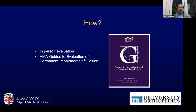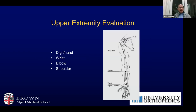How is this done? Just like an IME, a musculoskeletal impairment rating involves an in-person evaluation with a thorough physical examination focused on those aspects that the guides use to determine impairment rating. The upper extremity is broken up into four areas for impairment rating evaluations: digit and hand, wrist, elbow, and shoulder.